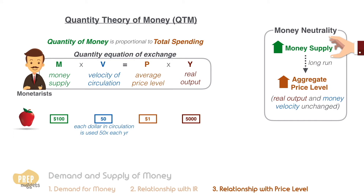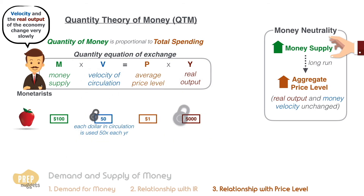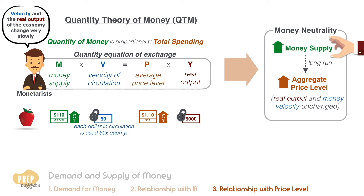Monetarists believe that the velocity and the real output of the economy change very slowly. So assuming that velocity and real output remain constant, any increase in the money supply will lead to a proportionate increase in the price level. For example, a 10% increase in the money supply will increase the price of each apple by 10%. This explains the money neutrality belief that when money supply is increased, real output and money velocity should remain unchanged, and the only consequence is that the aggregate price level will increase.